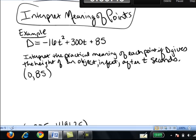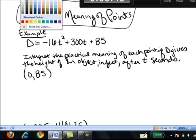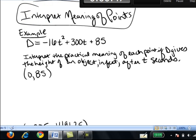If we went over 0 and up 85, we'd be right on the y-axis. Now, in the problem, I see that the formula inputs t values and outputs d values.